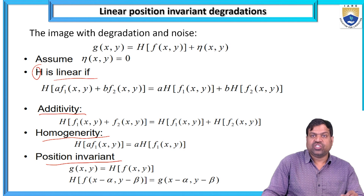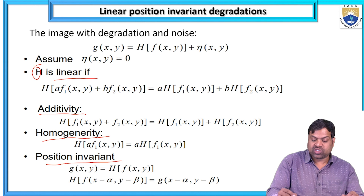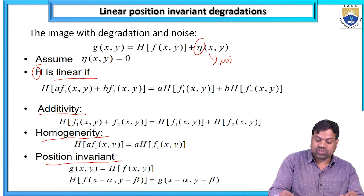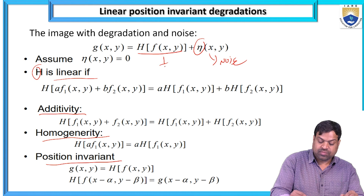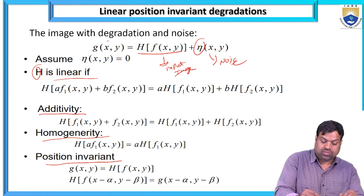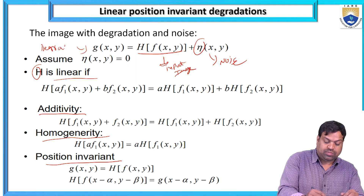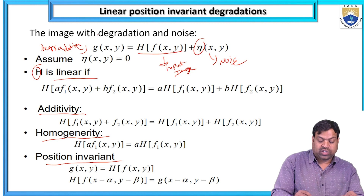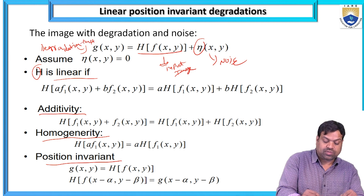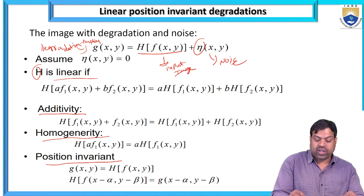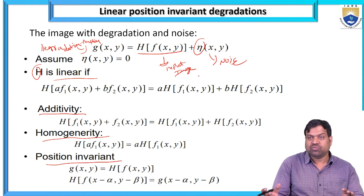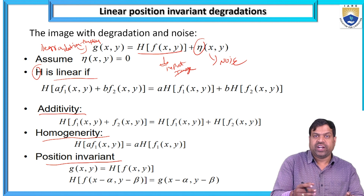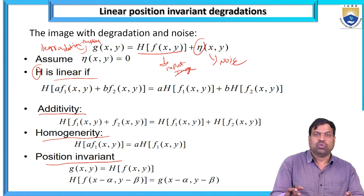The image with degradation and noise is G(x,y) = H[f(x,y)] + ν(x,y), where ν equals noise. The degradation function G(x,y) represents the input function with noise. When the input image has noise, that is called the degradation function, and we use filters to reduce the noise.